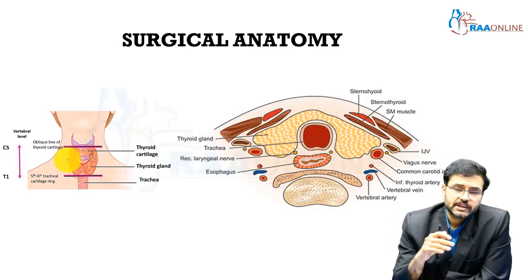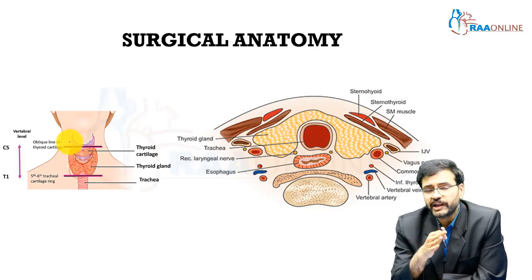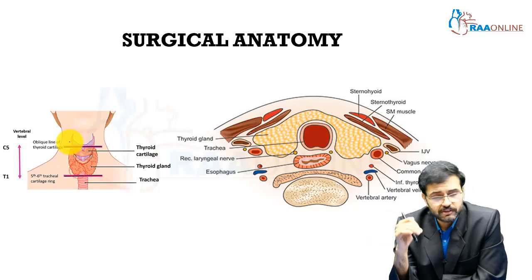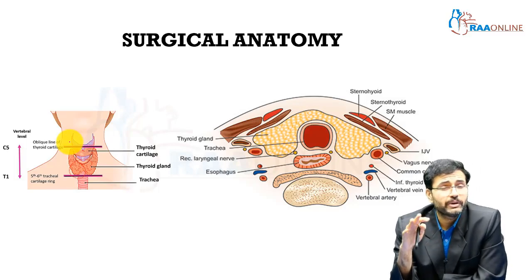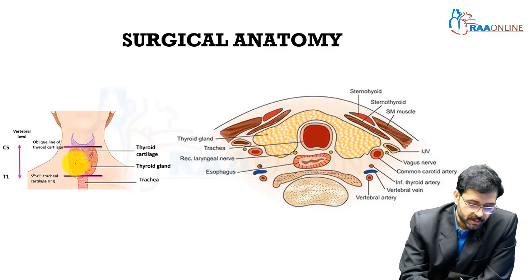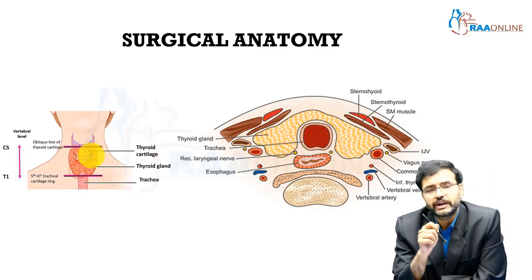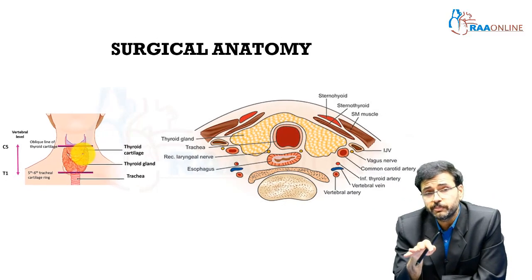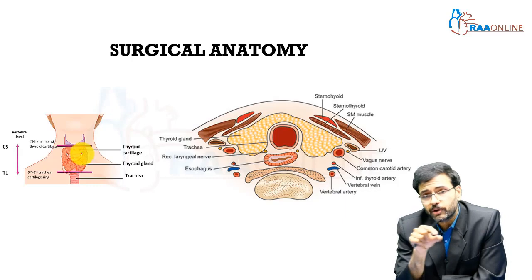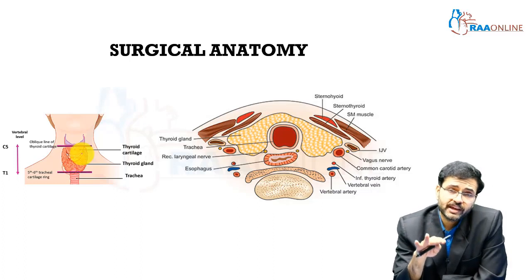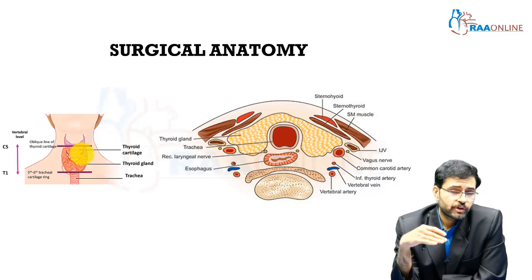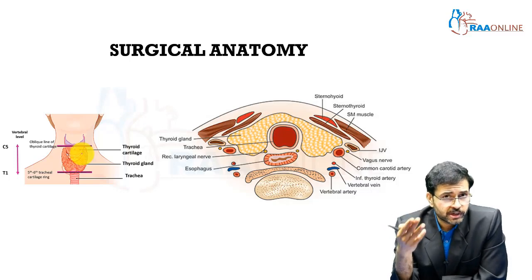The lobes of the thyroid gland are generally around 5 by 3 by 1.5 centimeters in size, and the isthmus is generally around 1.5 by 1.5 centimeters. The gland itself has an approximate weight of around 20 grams. The isthmus may sometimes be absent in around 10% of cases, or it might be just a fibrotic band. The isthmus is present over the second to fourth tracheal rings. Based on vertebral level, the thyroid gland extends from C5 to T1.